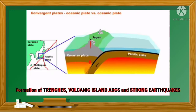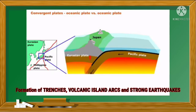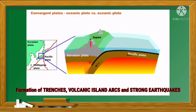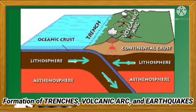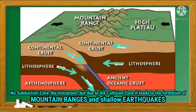When a convergent boundary occurs between two oceanic plates, one of those plates will subduct beneath the other. Normally, the older plate will subduct because of its higher density. Magma chambers are produced as a result of this melting, and the magma is lower in density than the surrounding rock material. It begins ascending by melting and fracturing its way through the overlying rock material. Magma chambers that reach the surface break through to form a volcanic eruption, just like in the convergence of oceanic to continental crustal plates that gives rise to the formation of trenches, volcanic arc, and earthquakes.